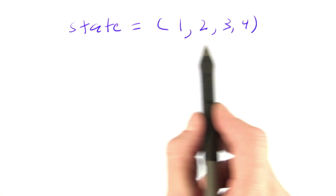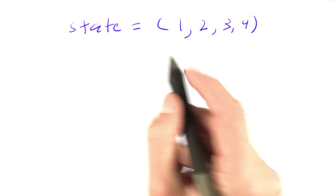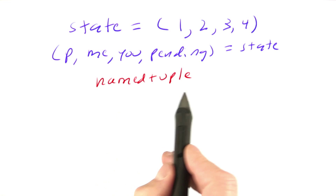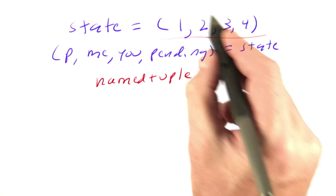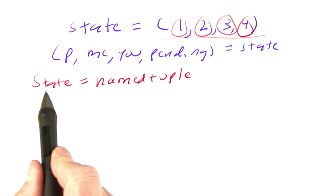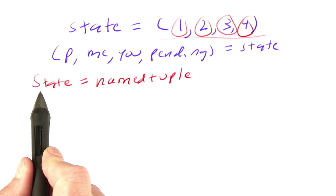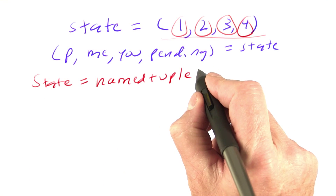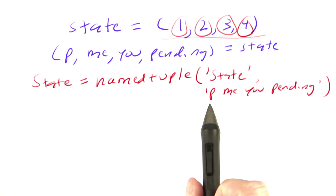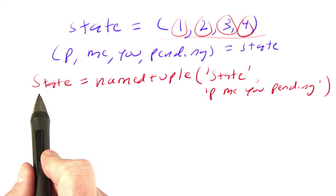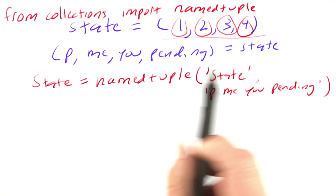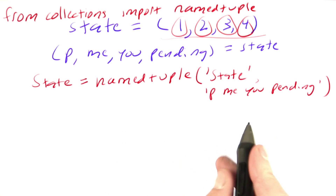Here's an alternative. Instead of defining a state by just creating a tuple and getting at the fields of a state by doing an assignment, we can use something called a named tuple that gives a name to the tuple itself as well as to the individual elements. We can define a new data type called State — using capitalized letters for data types. State is equal to a named tuple, and named tuple is in a module, so from collections import namedtuple gives me access to it.